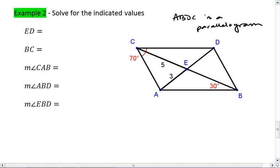Okay, let's start with these diagonals. So I have diagonal AD, where AE is 3, which means ED is also 3.